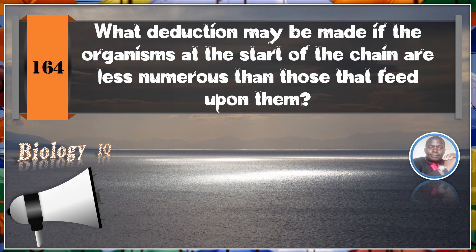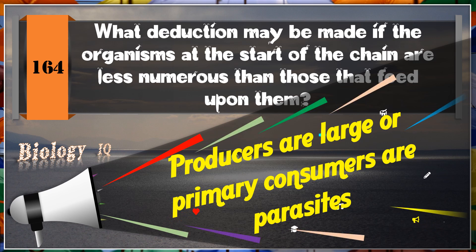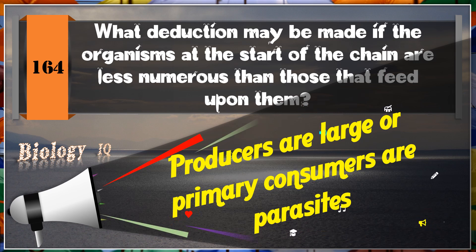What deduction may be made if organisms at the start of the chain are less numerous than those that feed upon them? Producers are large, or primary consumers are parasites.